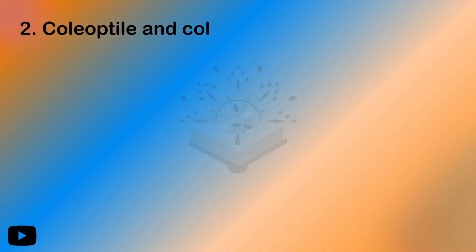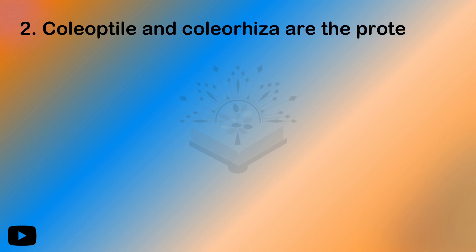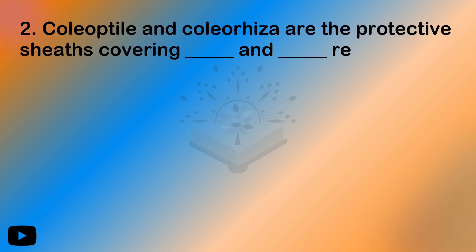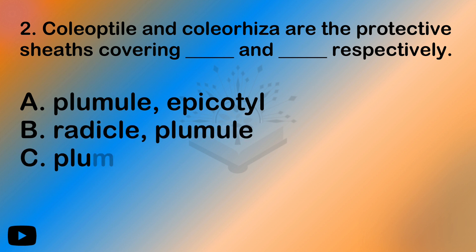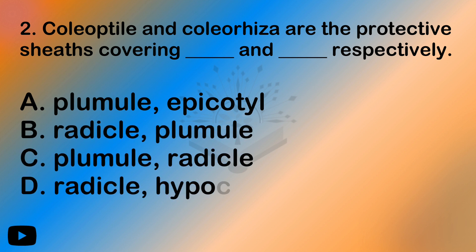The next question: coleoptile and coleorhiza are the protective sheaths covering dash and dash respectively. Now, coleorhiza — learning what it covers — coleorhiza means it is not above; it relates to the root.